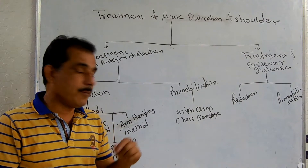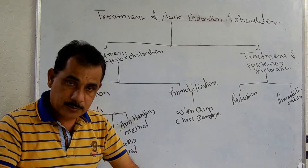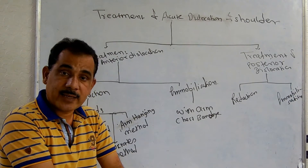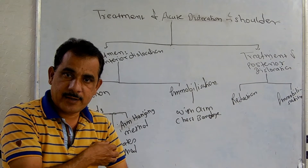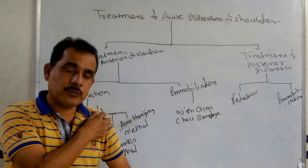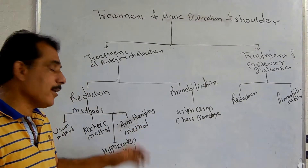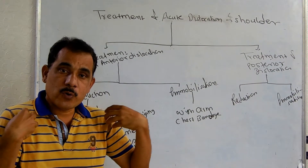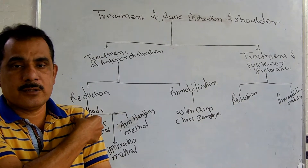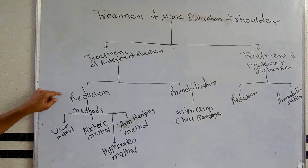The fourth method is the arm hanging method. The patient is asked to lie down on a table with the arms hanging down the sides of the table. The weight of the arm acts as traction, releasing the head of the humerus. The patient should rest for at least 15 minutes. After that, lateral rotation is applied and the head of the humerus is pushed backward to reduce it.